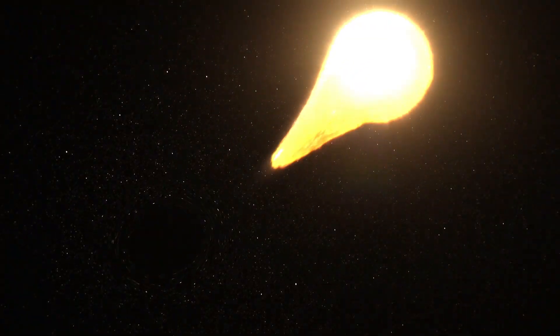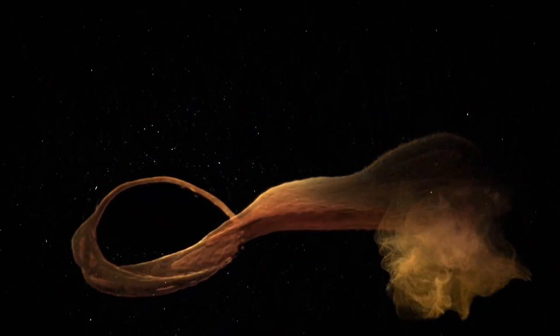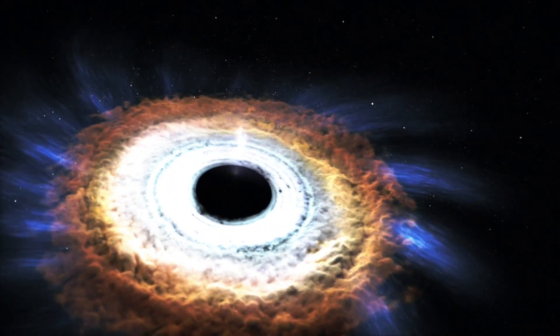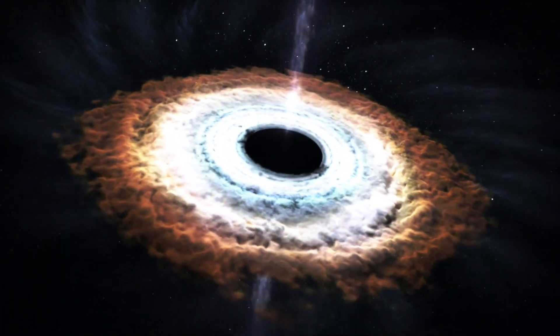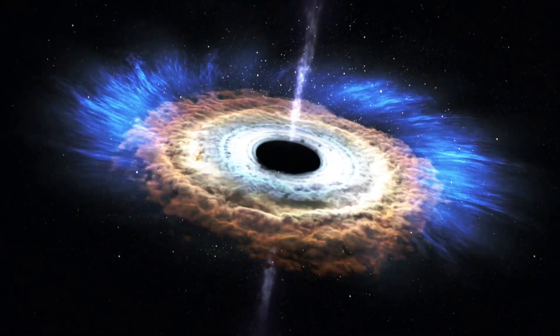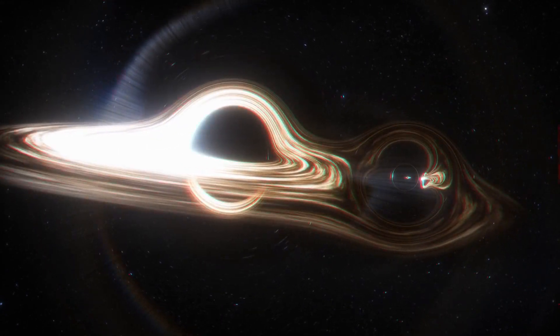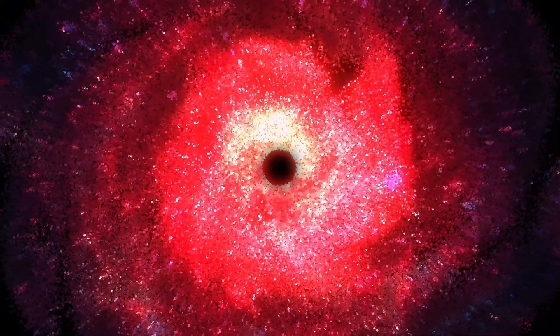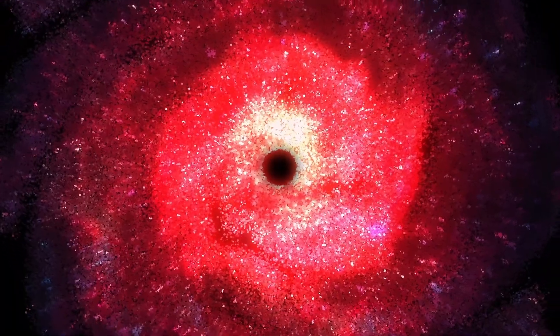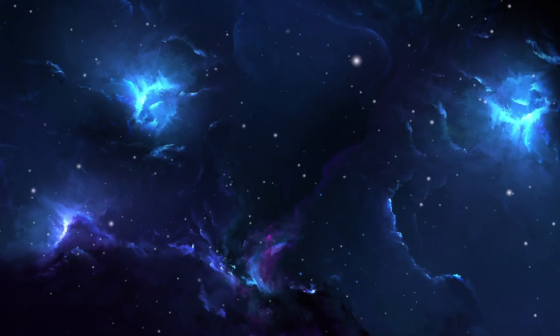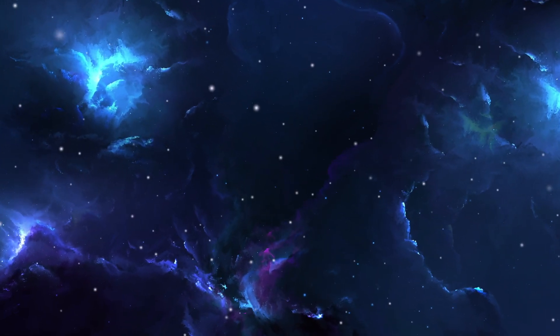Another way that black holes form is from the direct collapse of gas, a process that is expected to result in more massive black holes, with a mass ranging from one thousand times the mass of the sun up to even one hundred thousand times the mass of the sun. This channel circumvents the formation of the traditional star and is believed to operate in the early universe and produce more massive black hole seeds.